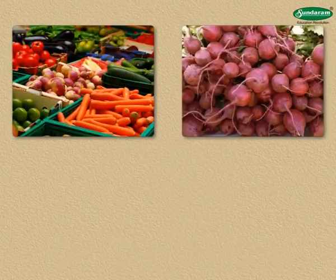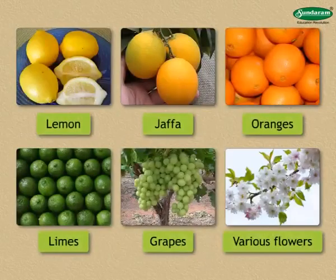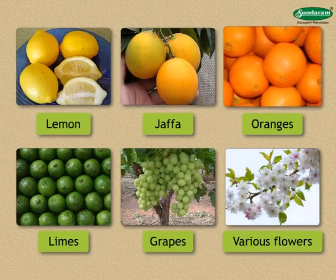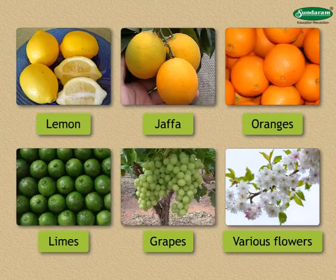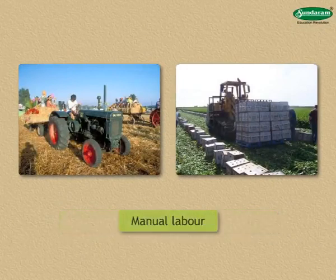Crops grown here include vegetables, beet, cotton, and others. Irrigated farming of fruits such as lemon, Jaffa oranges, limes, grapes, and various flowers has also been developed. As machines are used in agriculture, it saves manual labor and production has also increased.